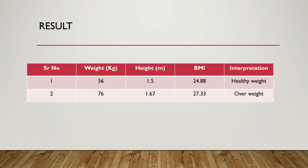The following results we observe. In the first case, the weight of the person is 56 kg and the height is 1.5 m. When we calculate using the formula, the BMI is 24.88, which means that person has a healthy weight.